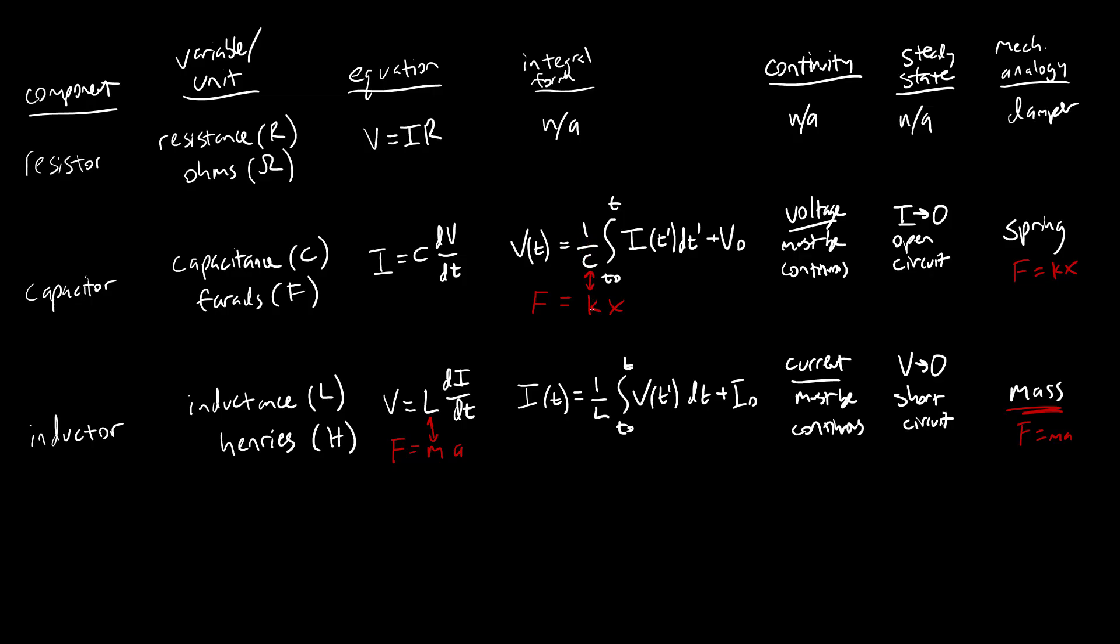So a bigger capacitance means a lower equivalent of a spring constant. So I think it's a little more intuitive to think of the inductor as a mass, maybe this inverse capacitance thing gets a little confusing. But again, just think of a capacitor like a spring that can store potential energy, it's just storing electrical energy instead of elastic mechanical energy.